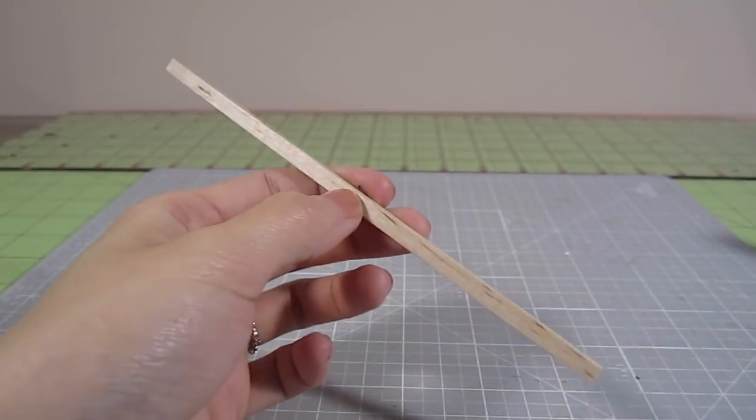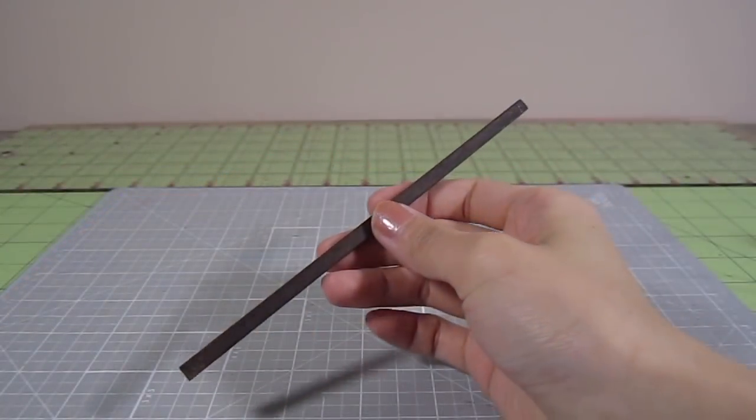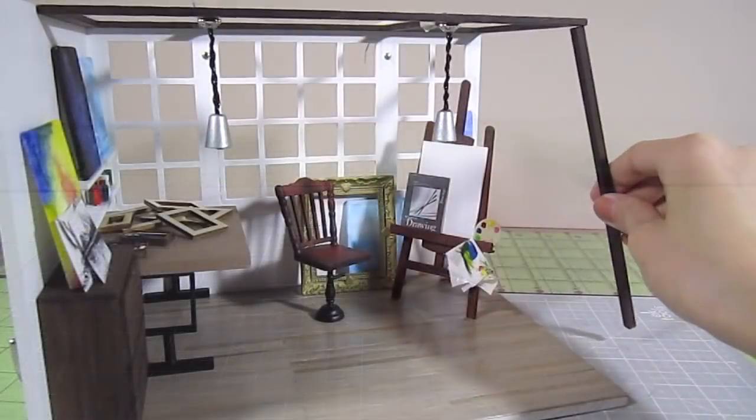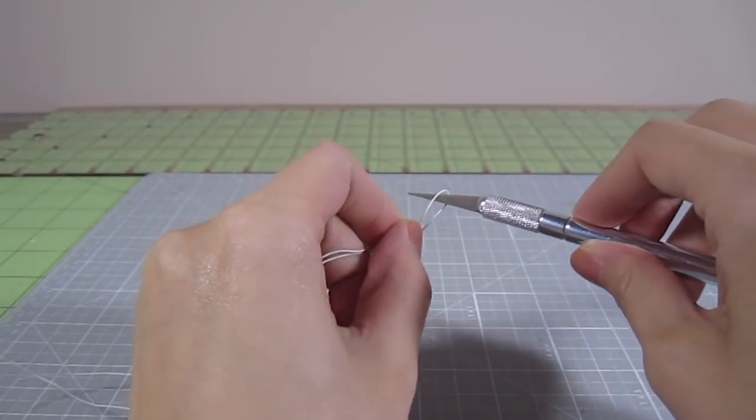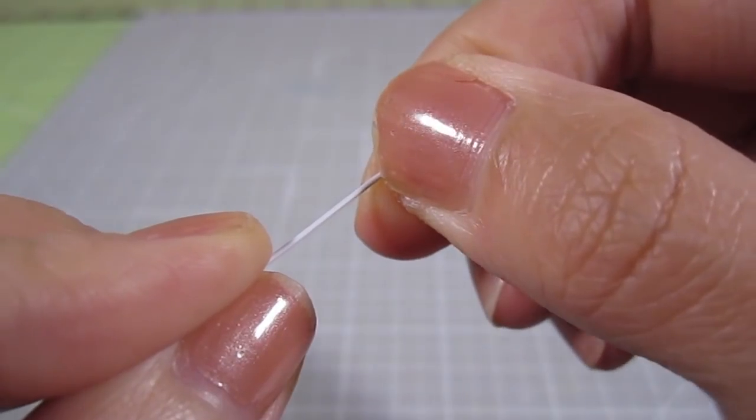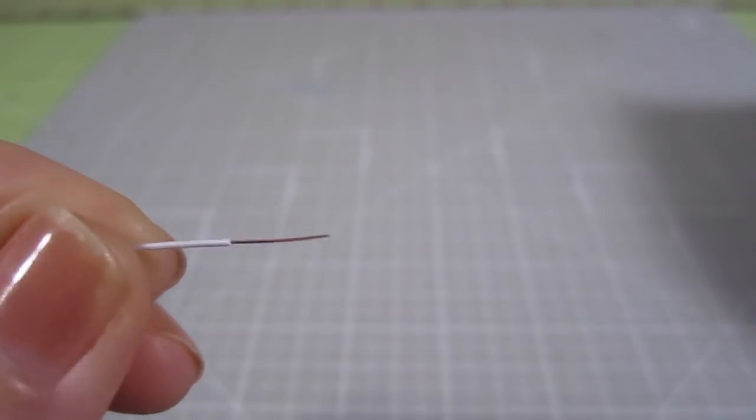For extra ceiling support, I take a square dowel and cut out a 6.5 inch length. Paint it brown and glue it to the right corner of the ceiling. Almost done guys. To set up the electrical, take the white extension wire from the lighting kit and cut it into 4 equal pieces. Strip the ends and pull the plastic coating off to expose the wire.